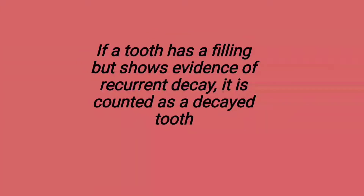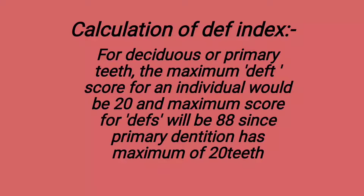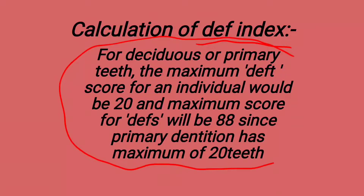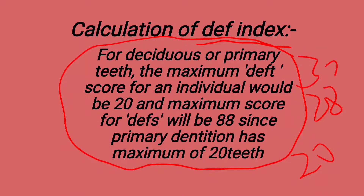If a tooth has a filling but shows evidence of recurrent decay, it is counted as a decayed tooth. For calculations: the maximum DEF score for an individual is 20 (since primary dentition has a maximum of 20 teeth), and the maximum DEFS score is 88. The calculation for DEF index is the same as for DMFT — the only change is in the number of teeth: DEF considers 20 teeth, while DMFT considers 28 teeth (or 32 if third molars are included).